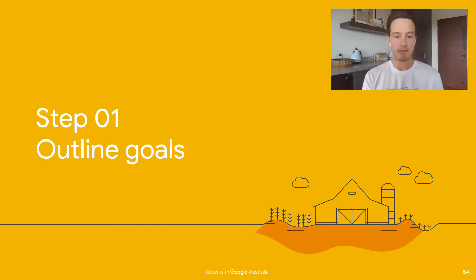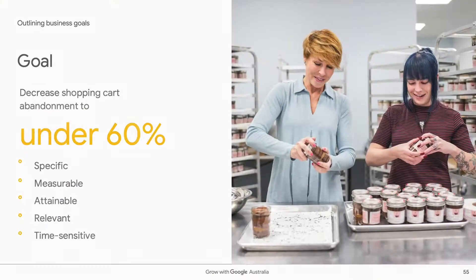Step one is to outline your business goals. As you follow along, think about a goal you'd like to hit — remembering it needs to be SMART: specific, measurable, attainable, relevant, and timely. For example, Wicked Good Cupcakes' goal was to decrease shopping cart abandonment to under 60% by the end of the month. It's specific (cart abandonment), measurable (a number), attainable (previously 70%), relevant (fewer abandonments means more purchases), and time-sensitive (by end of next month). Your goals might relate to number of leads, foot traffic, appointment bookings, app downloads, or online sales.